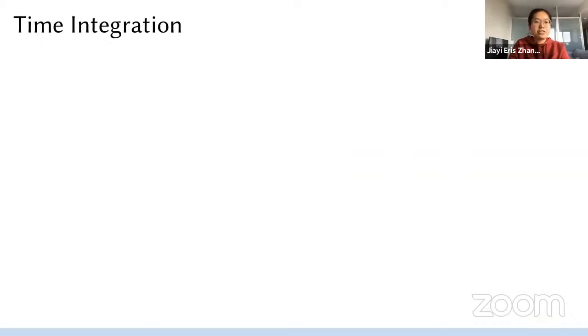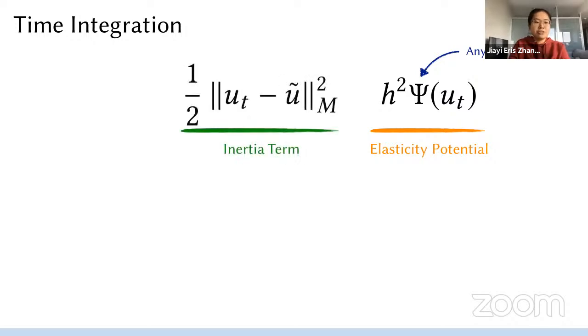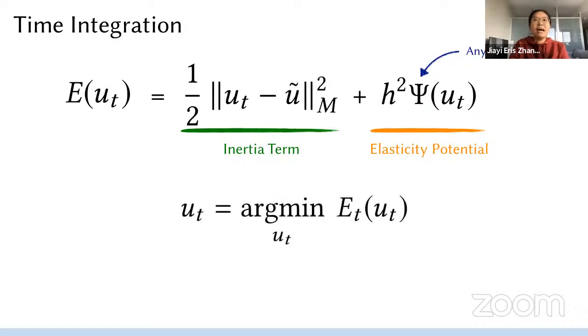Like most of the simulation papers, we start from the time integration. You are given the potential energy, whereas the psi function could represent any physical model, and you are also given the inertia term. Combining those two, the displacement finding problem for each frame is literally just an optimization problem and which is usually nonlinear.